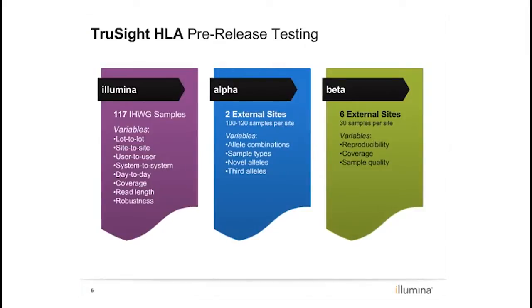We looked at novel alleles and some really challenging biology you wouldn't typically see — for instance, a third HLA allele present from a leukemic blast cell with a different HLA type. We were able to pick that up as well. After the alpha study, we went into a beta study with four additional sites. Each site performed at least 30 samples that they selected themselves, and we asked for broad representation of allele combinations and encouraged sites to throw hard samples at the assay.